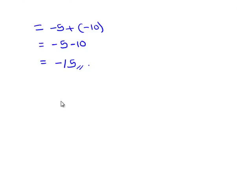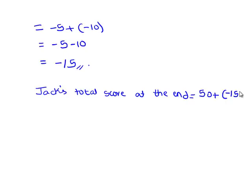Therefore, adding them, we get Jack's total score at the end is equal to total positive score plus total negative score, that is equal to 50 plus minus 15.